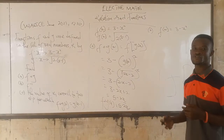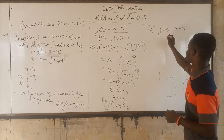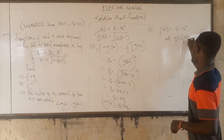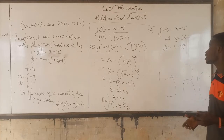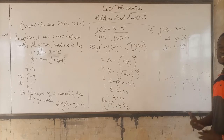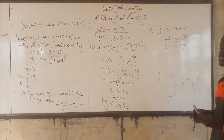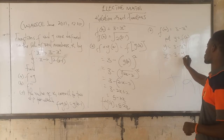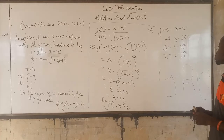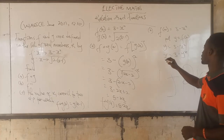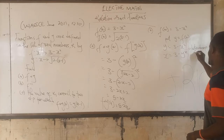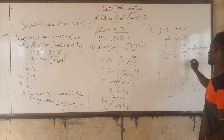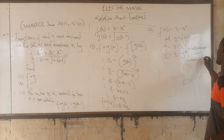To find f inverse, the first step is to let y = f(x), so y = 3 minus x squared. The next step is to swap the variables x and y: where you see x, replace with y, and where you see y, replace with x. So we get x = 3 minus y squared. Now we make y the subject.